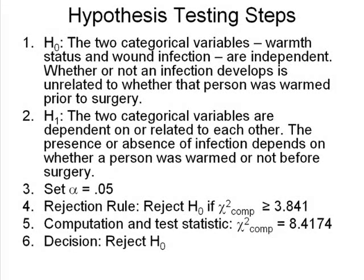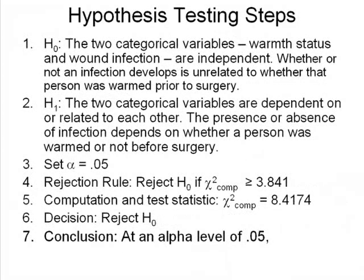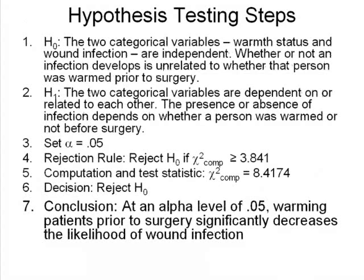This leads us to our conclusion — our three-part conclusion. Step seven always starts the same way: conclusion, at an alpha level of 0.05. Now comes our statement. Here it was significant, so we say: at an alpha level of 0.05, warming patients prior to surgery significantly decreases the likelihood of a wound infection. That's pretty interesting. Now we just add our statistical string.